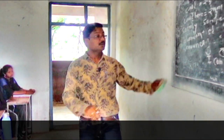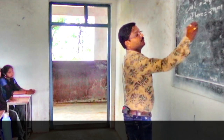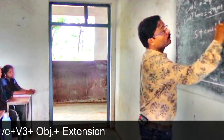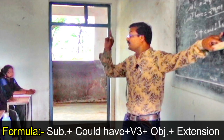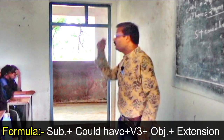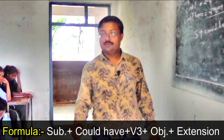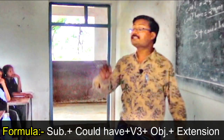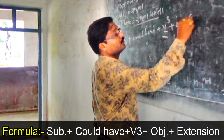I could have — keep in mind: when 'have' comes, V3 definitely comes. Formula for could have: Subject plus could have plus V3. Always keep in mind — when have comes, V3 will definitely come. It might be could have, should have, must have, may have. It might be present perfect tense or past perfect tense. Have, has, had — when they come, V3 definitely comes.